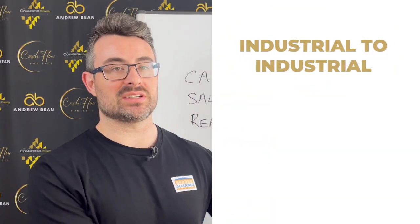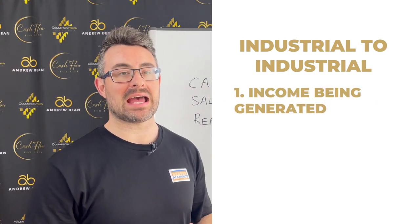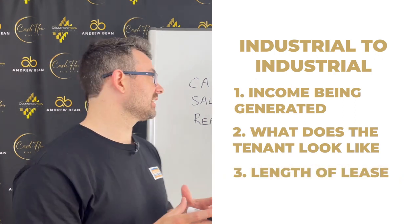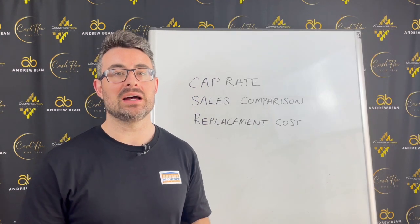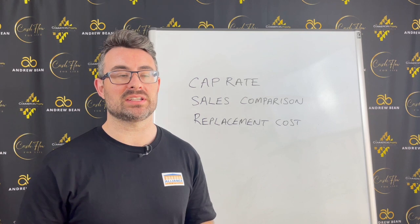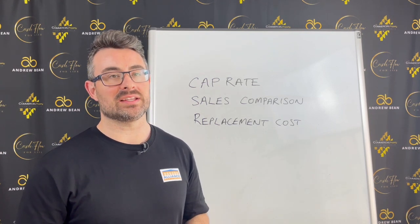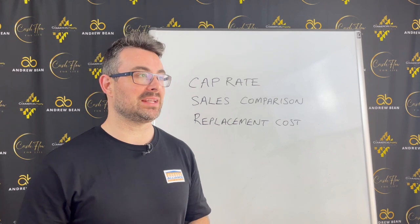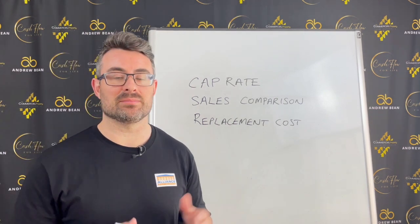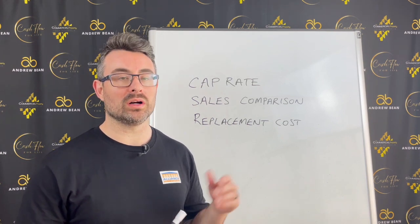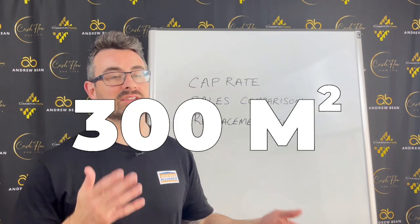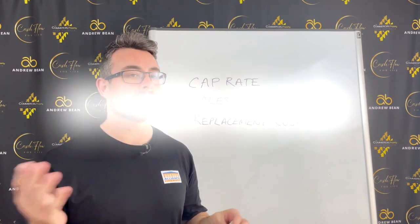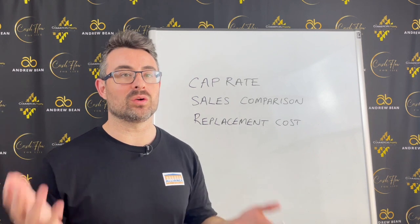At minimum, it's industrial to industrial. Then consider: what is the income being generated, what does the tenant look like, and what is the length of the lease? Comparables in commercial property are difficult because there aren't usually that many. It's not like a residential house where four beds, two baths, two garages in the same street is pretty comparable. Even two industrial properties on the same street could differ — one is 100 square metres, another 300 square metres, totally different businesses. One could have a one or two year lease, the other a five year lease. You have to factor in all these things.